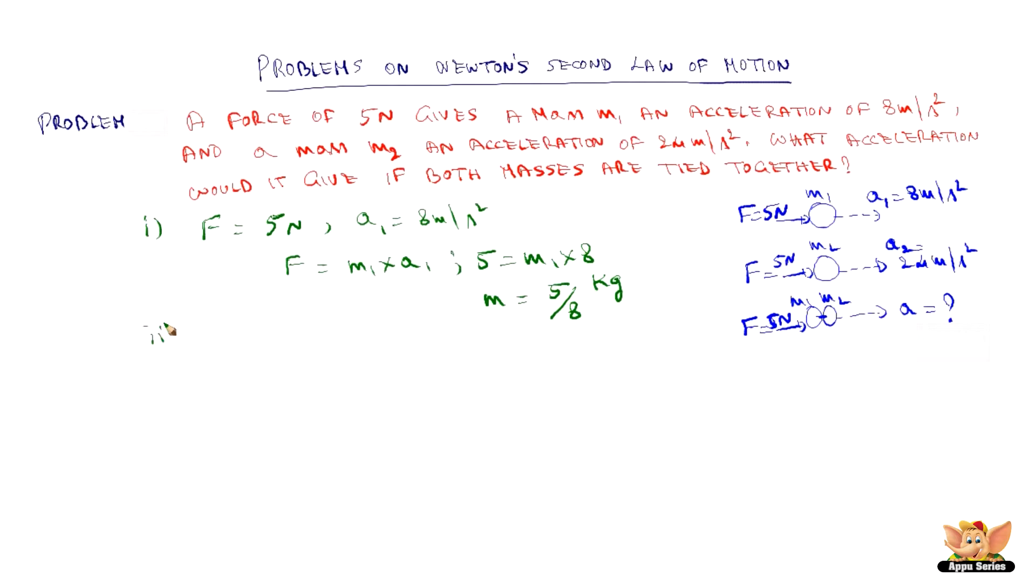And in the second part, let us find what is m2. So F is 5 Newton and A2 is 24 meter per second square. So F is equal to m2 into A2, which means 5 is equal to m2 into 24. So m2 is equal to 5 by 24 kg. So we found m1 from this and we found m2 from this.